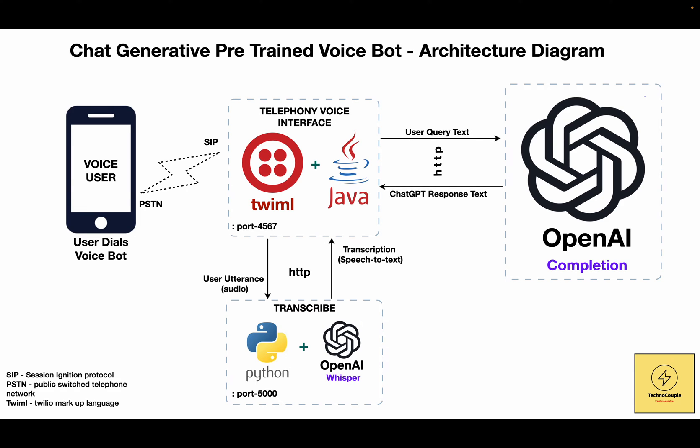Now let's talk about the transcription module. As we need to send text input to OpenAI's completions API for conversation, we need to convert the caller's voice input into text first. For this, we have written a sample Python program which uses OpenAI's Whisper API for transcription. This Python program takes a WAV or MP3 file as input and passes it to the Whisper API, which returns the transcription of the input audio.